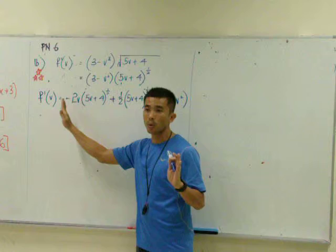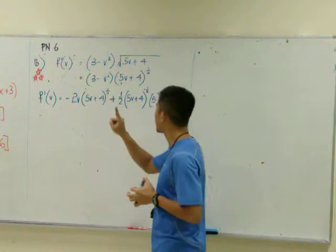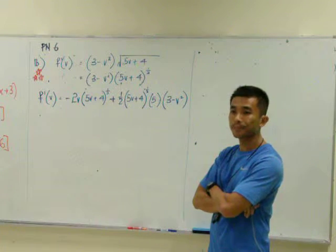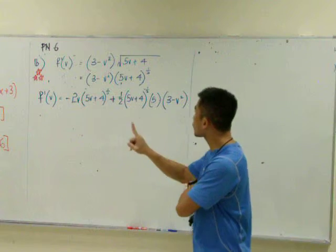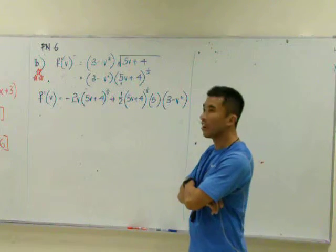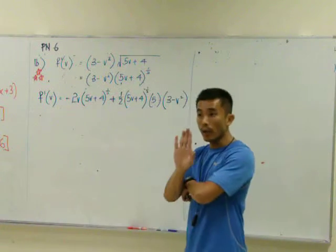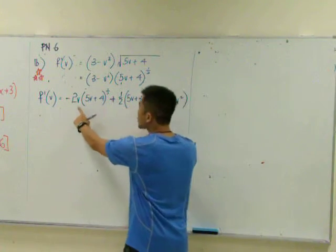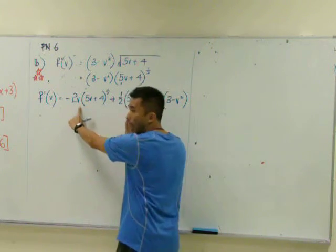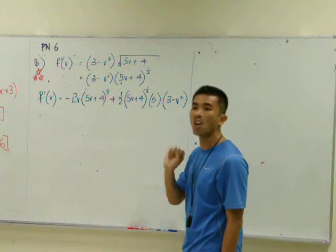Now comes the part - factorize. Tell me, we go term by term. Tell me, anything we need to factorize for the number? No. Anything we need to factorize for V? No, V by itself. Number cannot take out. The V must be by itself, then you can take out. So now, there's a bracket that is common.